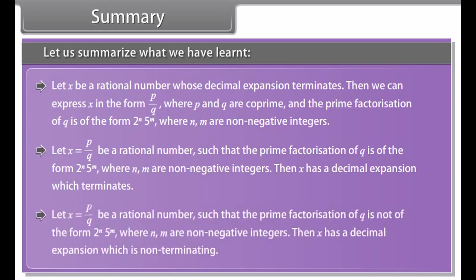Summary: Let X be a rational number whose decimal expansion terminates. Then we can express X in the form P upon Q, where P and Q are co-prime, and the prime factorization of Q is of the form 2 raised to the power N × 5 raised to the power M, where N and M are non-negative integers. If the prime factorization of Q is of this form, then X has a decimal expansion which terminates. If the prime factorization of Q is not of this form, then X has a decimal expansion which is non-terminating and recurring.